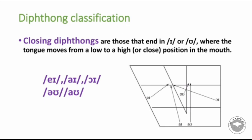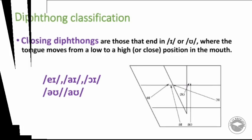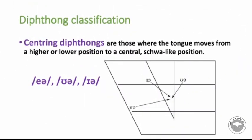Some of these diphthongs start from /a/ and move upward — from mid-close or from low to close position. Those that move upward are called closing diphthongs. The second type is centering diphthongs, where the tongue moves from a higher or lower position to a central position — those ending in /ə/ are centering diphthongs, as shown in the figure.